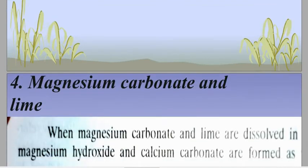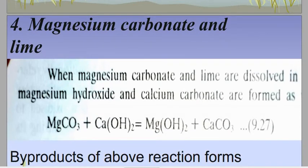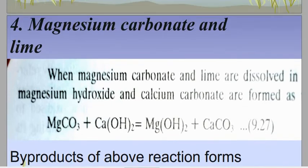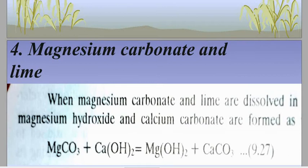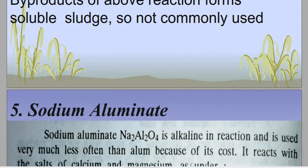Magnesium carbonate and lime, when dissolved in water, give the formation of magnesium hydroxide and calcium carbonate. The reaction: MgCO3 reacted with Ca(OH)2 gives Mg(OH)2 and CaCO3. The byproducts form soluble sludge, so this coagulant is not commonly used — it is largely obsolete in practice.